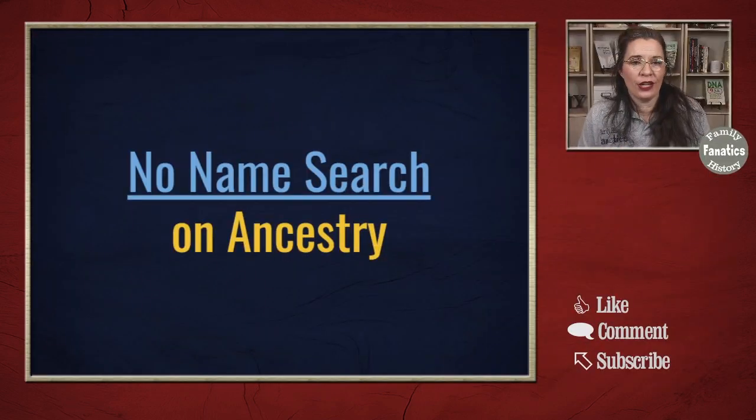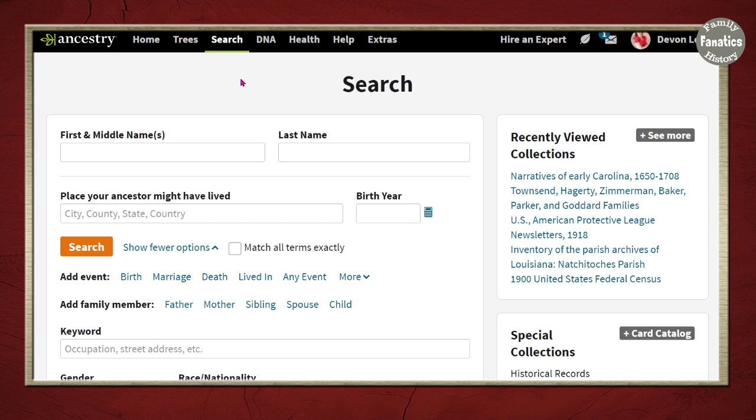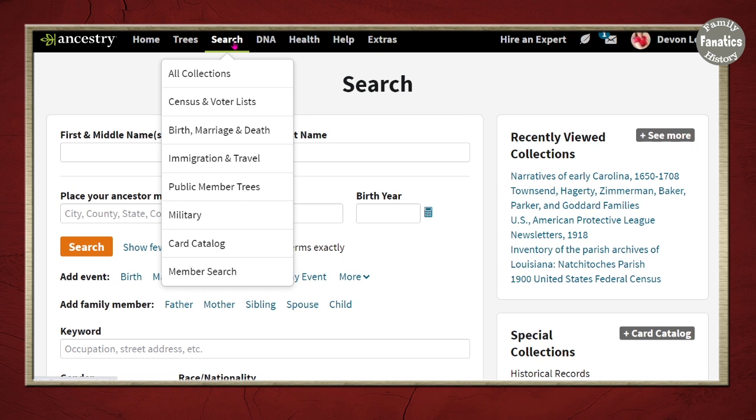Before you start diving into the records to try a no-name or no-surname search, you need to review what you actually do know about your ancestors. In this case, we're going to talk about Elizabeth Jane Weekly Pitney Sparks — or Jane Weekly Sparks. She had a lot of last names. I'm missing her in the 1900 census. Where did Elizabeth Jane go in 1900? She possibly lived in Ohio and Missouri, somewhere in the United States.